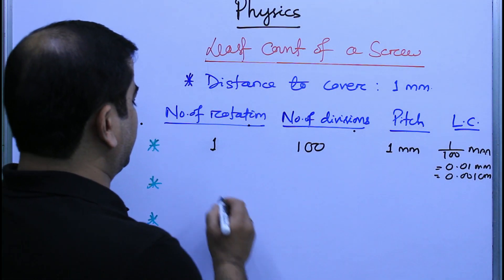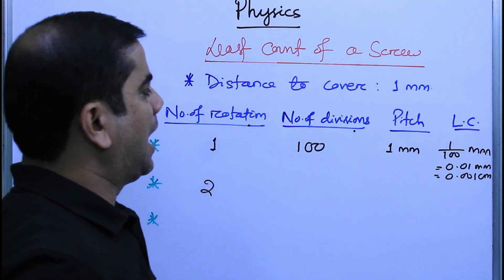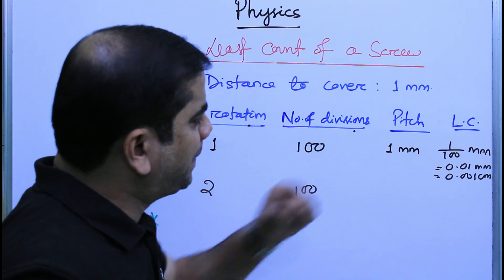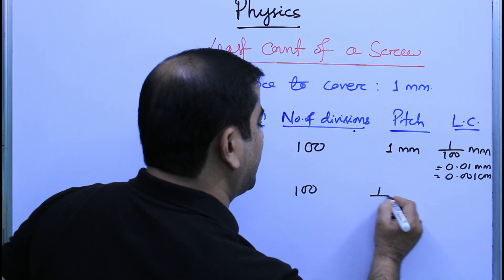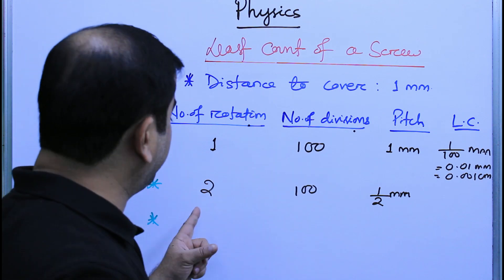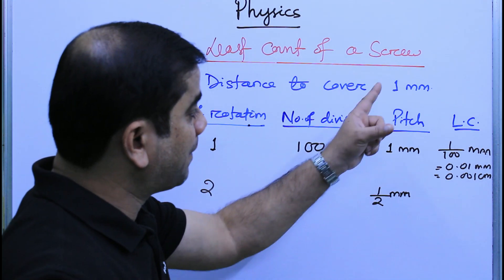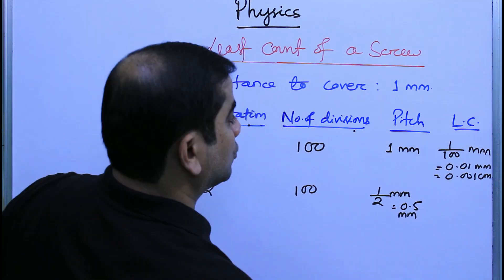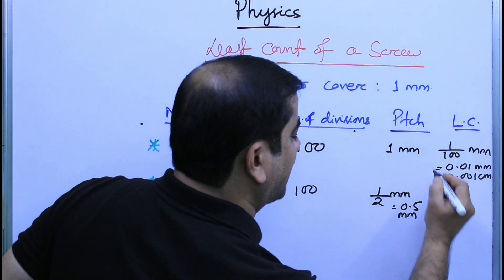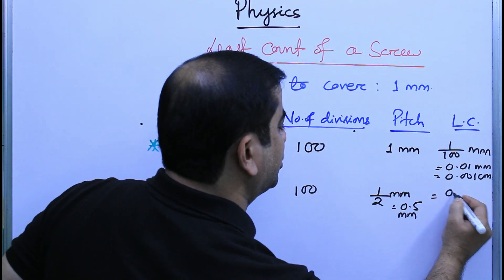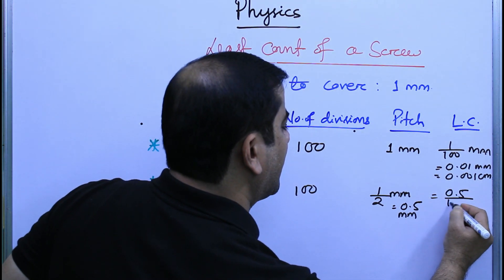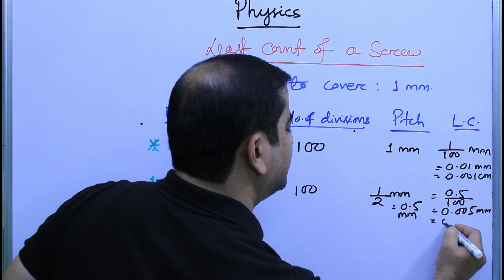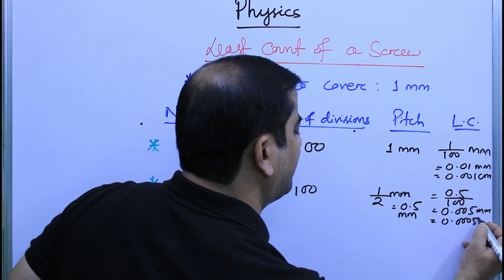If the number of rotations is 2 to cover 1 millimeter and the number of divisions is 100, then the pitch is 0.5 millimeter, because it covers 1 millimeter in two rotations. So the least count is 0.5 divided by 100, which equals 0.005 millimeter or 0.0005 centimeter.